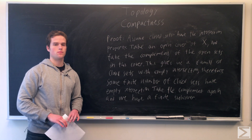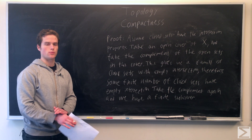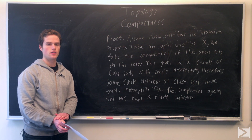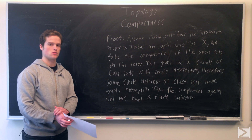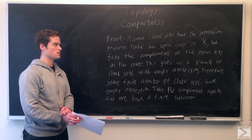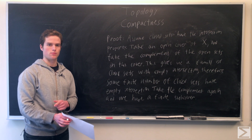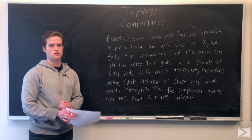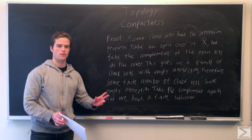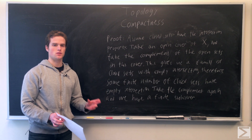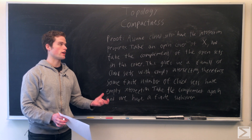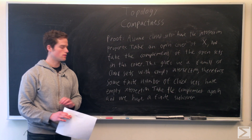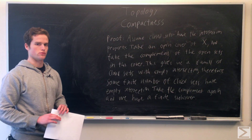Since the total intersection is empty, there must be some finite number of closed sets in this family which also have an empty intersection — otherwise the total intersection would not be empty. Taking the complement of this finite set of closed sets gives us a finite open cover of X from our original open cover. So X must be compact, and that proves the theorem.